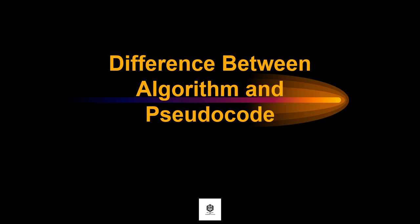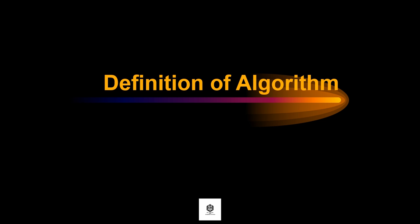Computer programming contains an innermost part of generating an unambiguous sequence-wise procedure for the computer to follow in order to produce particular results. Algorithms are considered to be the foundation of computer programming. So let's proceed to the definition of algorithm.